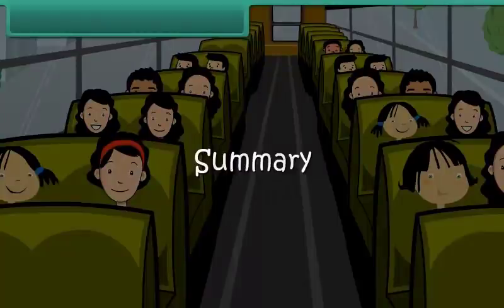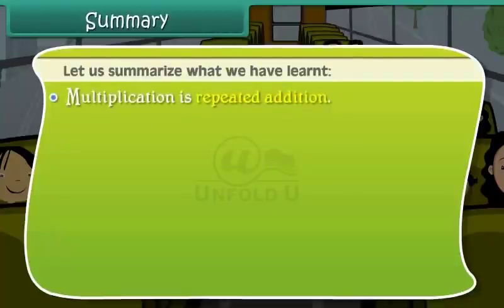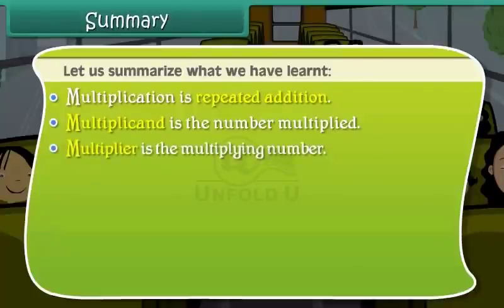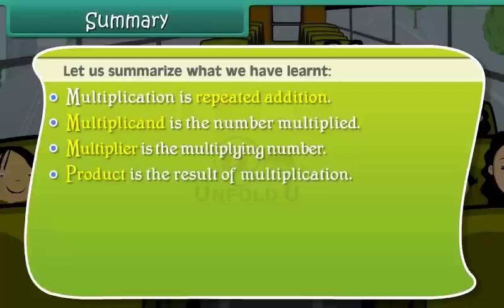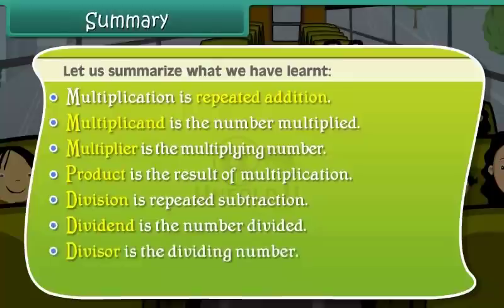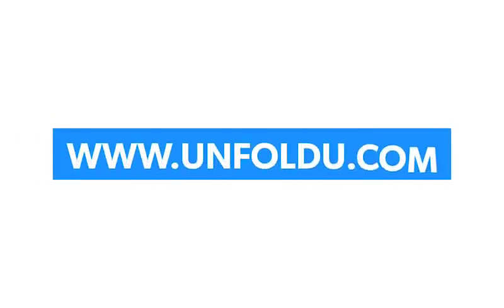Let us summarize what we have learnt. Multiplication is repeated addition. The multiplicand is the number being multiplied. The multiplier is the multiplying number. The product is the result of multiplication. Division is repeated subtraction. The dividend is the number being divided. The divisor is the dividing number. The quotient is the result of division. If you like this video, please like, share, and subscribe to our YouTube channel. For more details, visit www.unfoldyou.com.